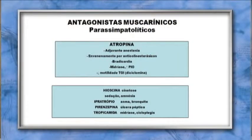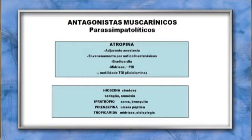Os antagonistas dos efeitos nos receptores muscarínicos são chamados parassimpatolíticos. A atropina é adjuvante da anestesia, utilizada no envenenamento por anticolinesterásicos, com indicação na bradicardia, causa midríase e aumenta a pressão intraocular. A diciclomina diminui a motilidade do trato gastrointestinal. A escopolamina (iocina) é usada para cinetose, sedação e amnésia. O ipratrópio é indicado na asma e bronquite. A pirenzepina para úlcera péptica, e a tropicamida como colírio, induzindo midríase e cicloplegia.